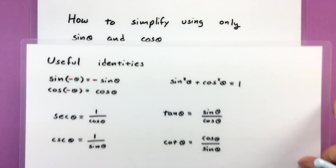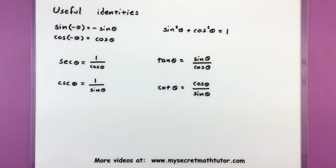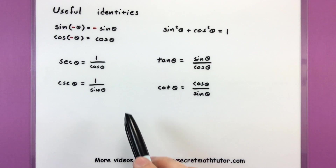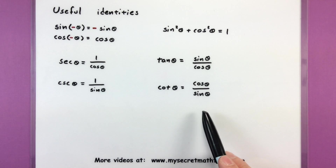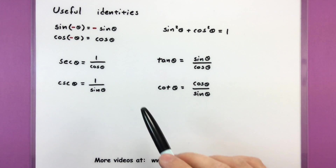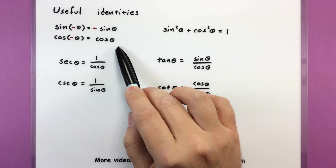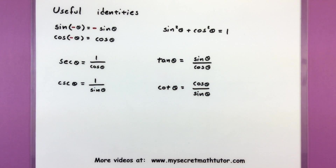In order for this process to work you really do have to know a few identities in your back pocket so that you can begin the simplifying process. But really you don't have to remember all of the identities — only focus on the ones that involve sine and cosine because those are the ones you'll end up using the most. Here I have just a couple of my negative angle identities, only the ones for sine and cosine.